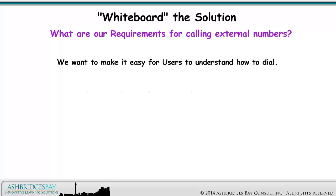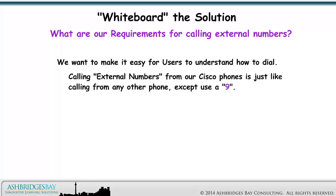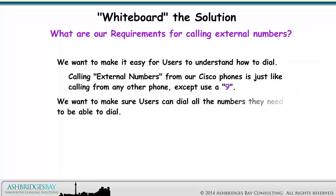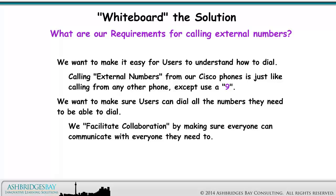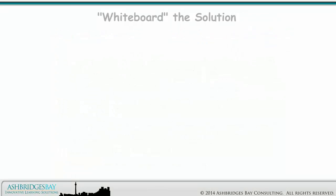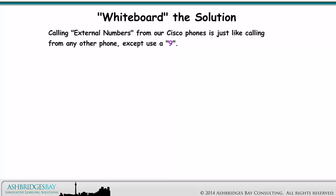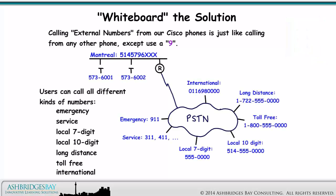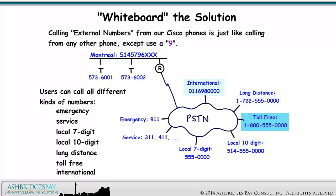We want to make it easy for users to understand how to dial. Calling external numbers from our Cisco phones is just like calling from any other phone — except use a 9. We want to make sure users can dial all the numbers they need to dial, and we facilitate collaboration by making sure everyone can communicate with everyone they need to. We don't want post-dial delay — slow dialing doesn't facilitate anything. Users can call all different kinds of numbers: emergency, service, local 7-digit, local 10-digit, long distance, toll free, and international.